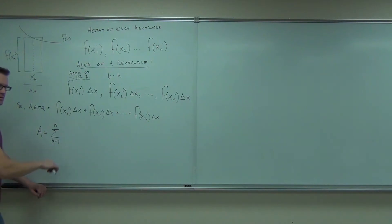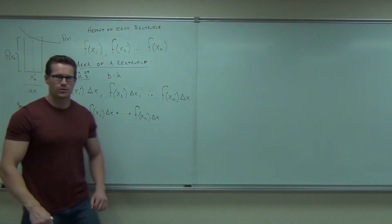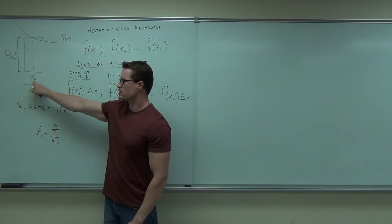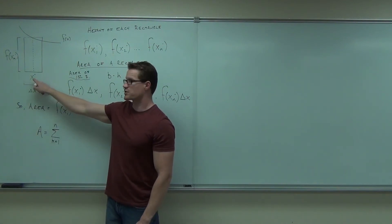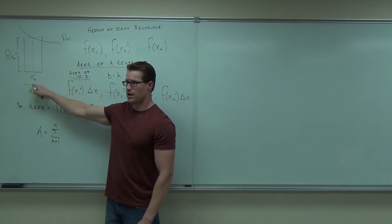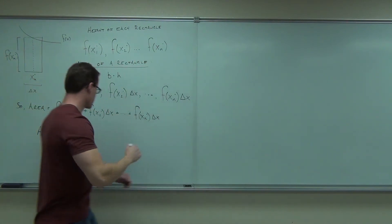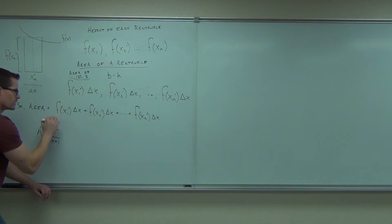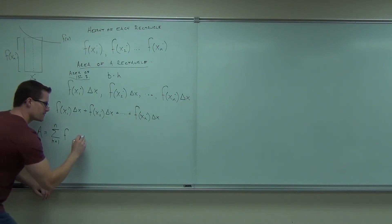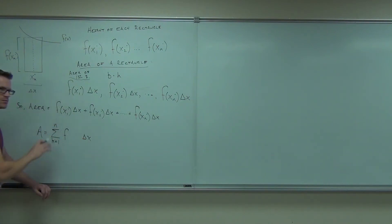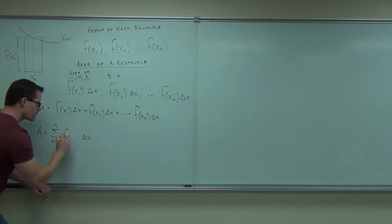Do you know why we use k? We use the same symbol that we used there — that's x sub k, meaning each individual one. We're just going to let this go from the first one to the second one to the nth one, however many we have. We don't want f to change, we definitely don't want delta x to change. What we really want to change is the index.